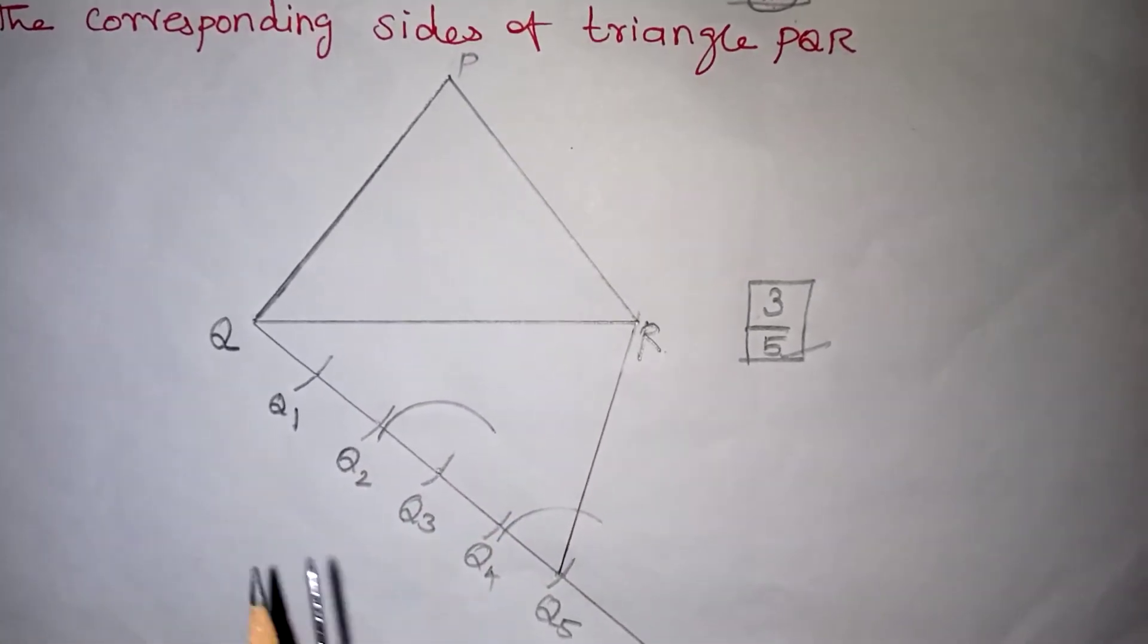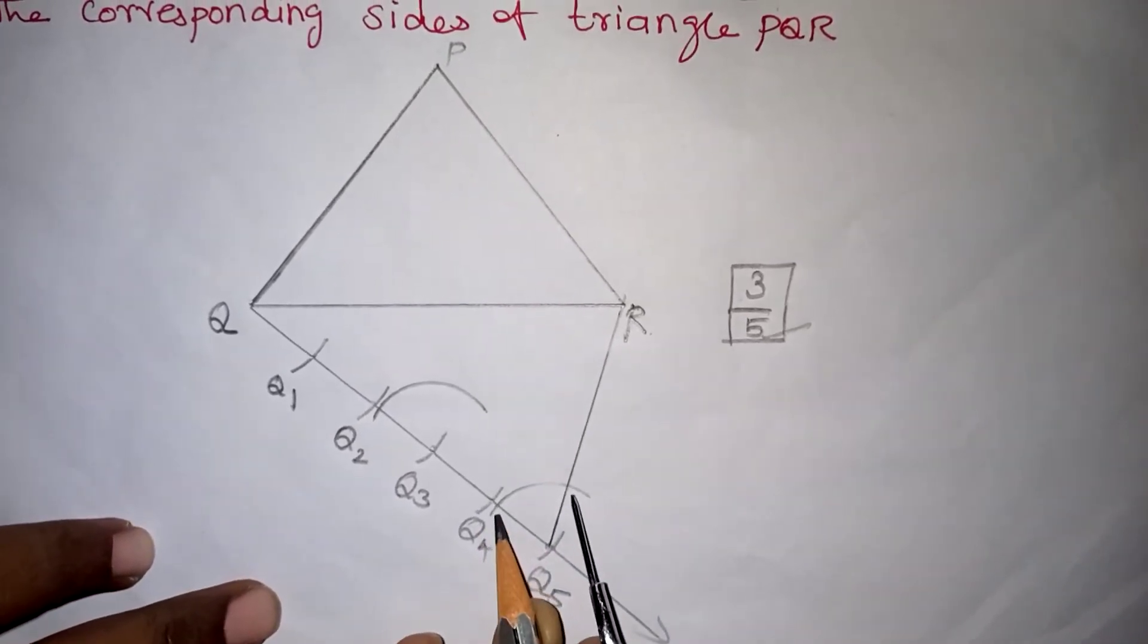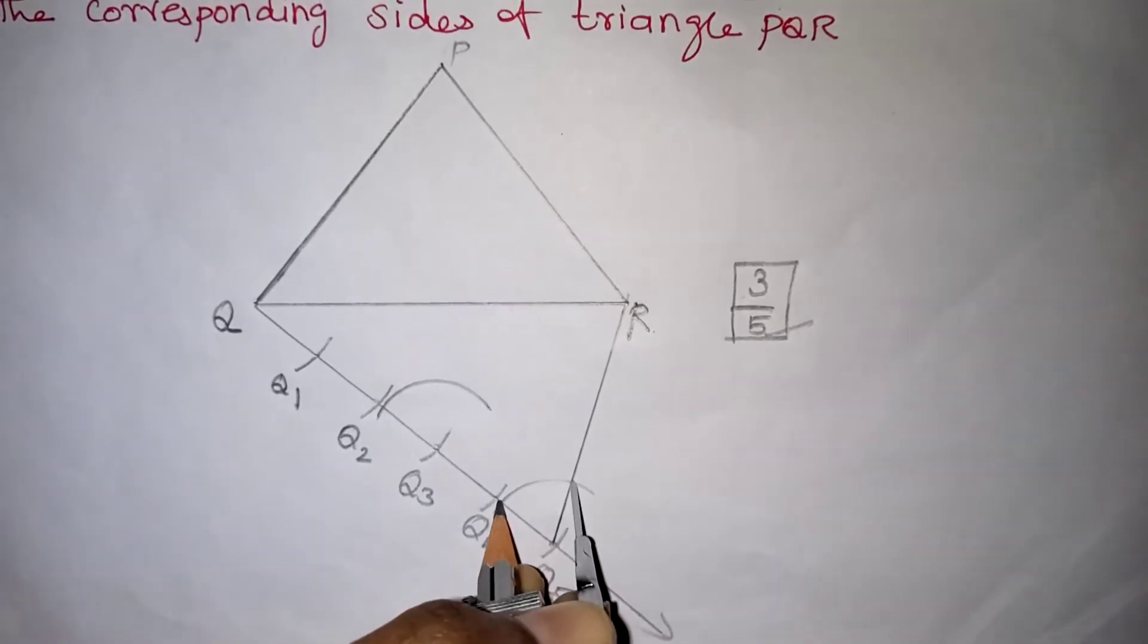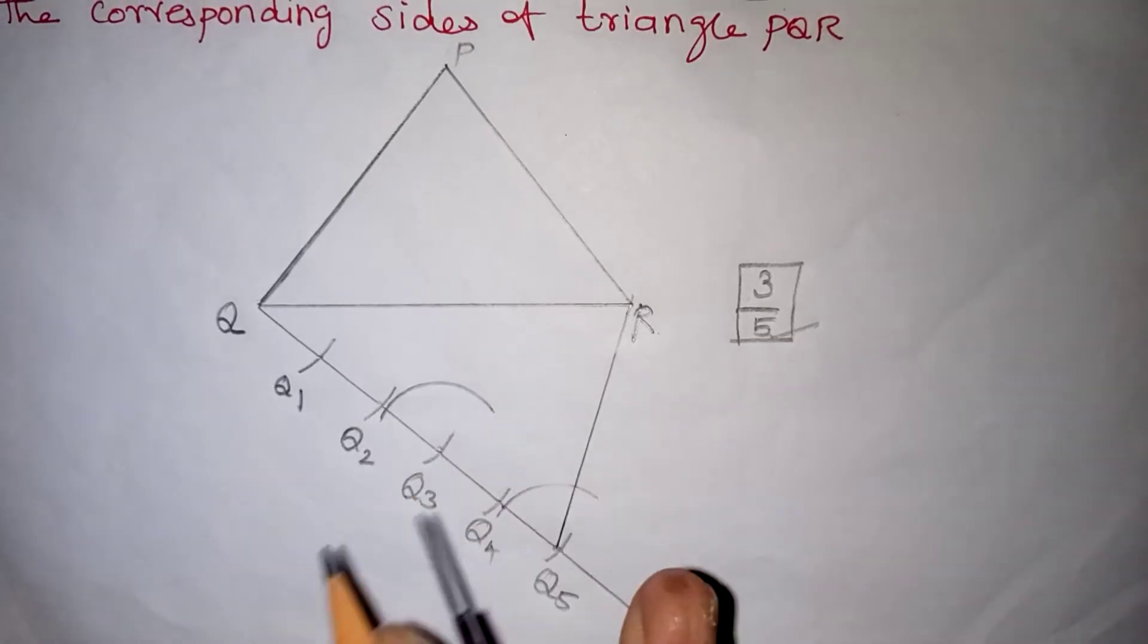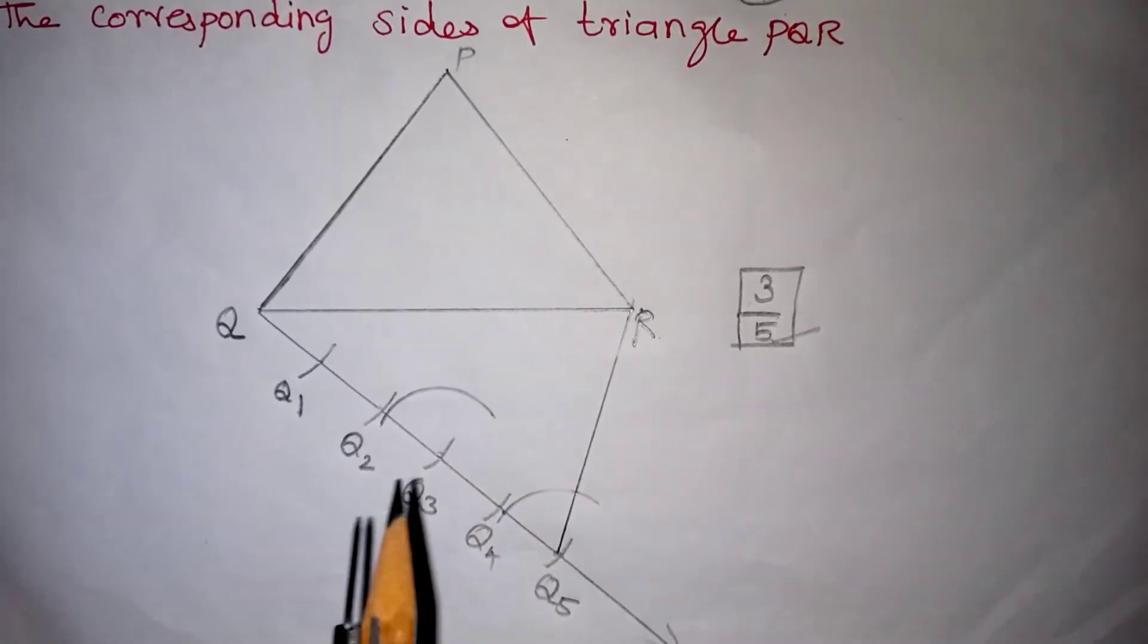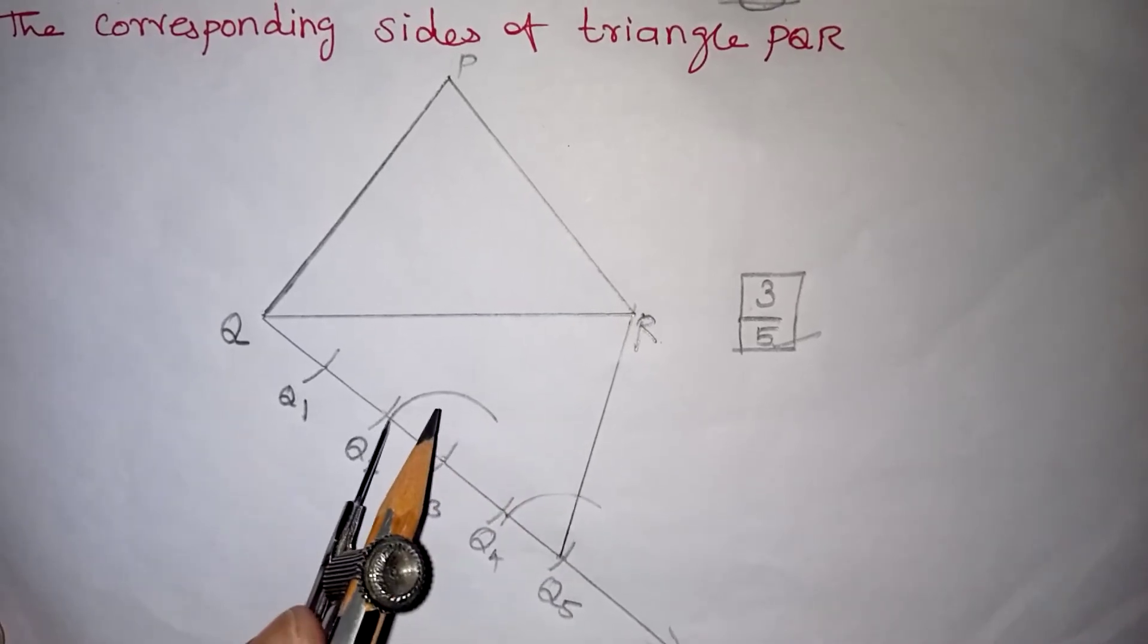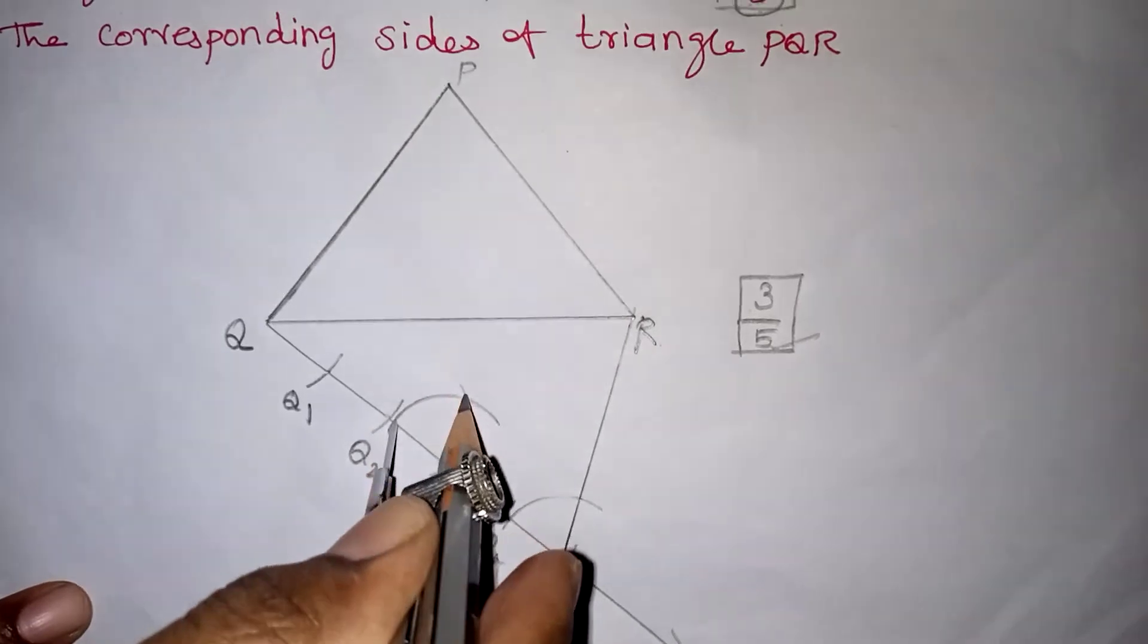After this, you have to take your compass. This angle should be measured with your compass needle and pencil. You have to measure like this. After measuring, without changing, you have drawn the arc. The new arc is there. From this arc, you have to place your compass in this place and cut the arc now.